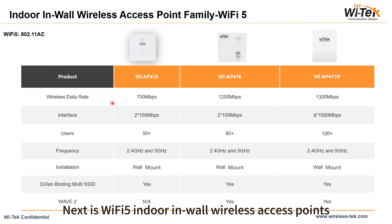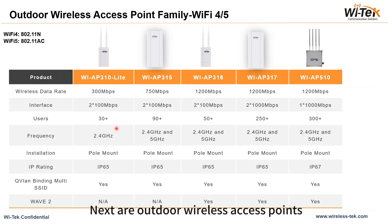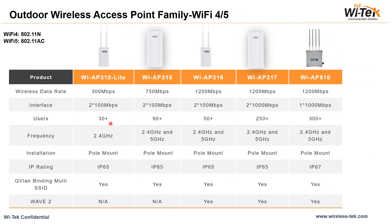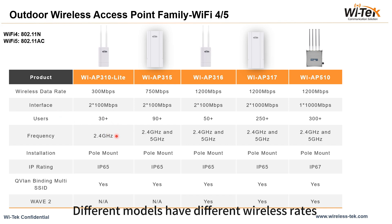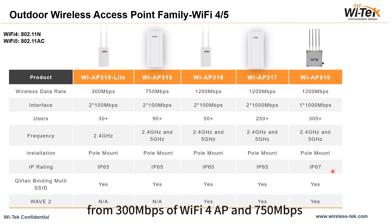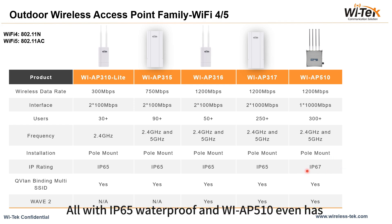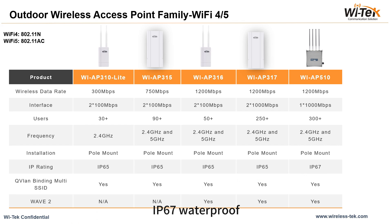Next are Wi-Fi 5 indoor in-wall wireless access points, followed by outdoor wireless access points also ranging from Wi-Fi 4 to Wi-Fi 5. Different models have different wireless rates: 300 Mbps for Wi-Fi 4 AP, and 750 Mbps or 1,200 Mbps for Wi-Fi 5. All have IP65 waterproofing, and WI-AP 510 even has IP67 waterproofing.